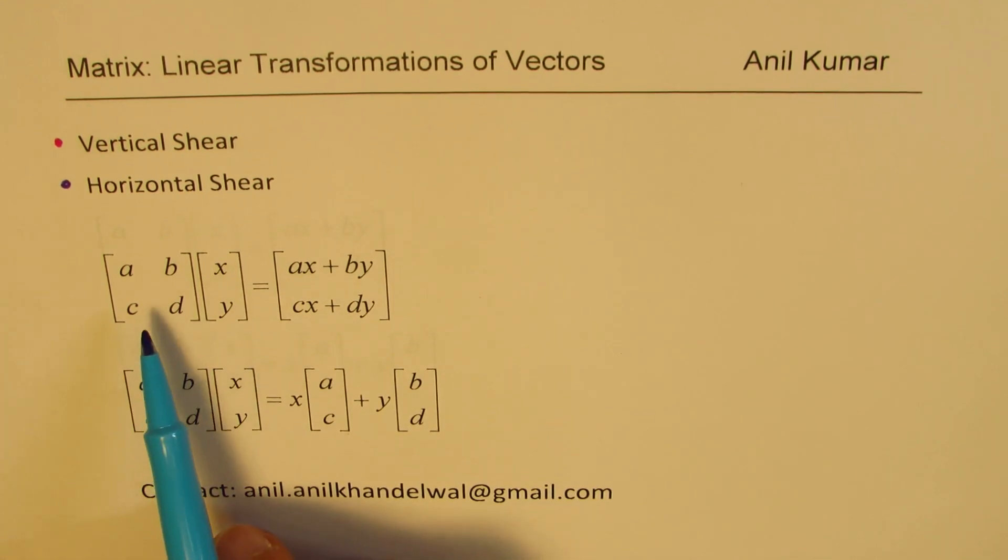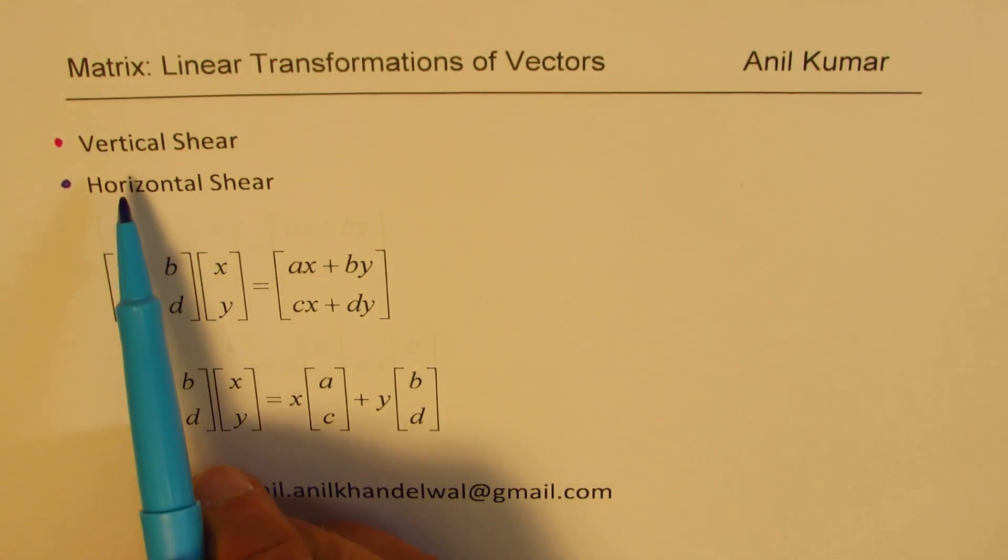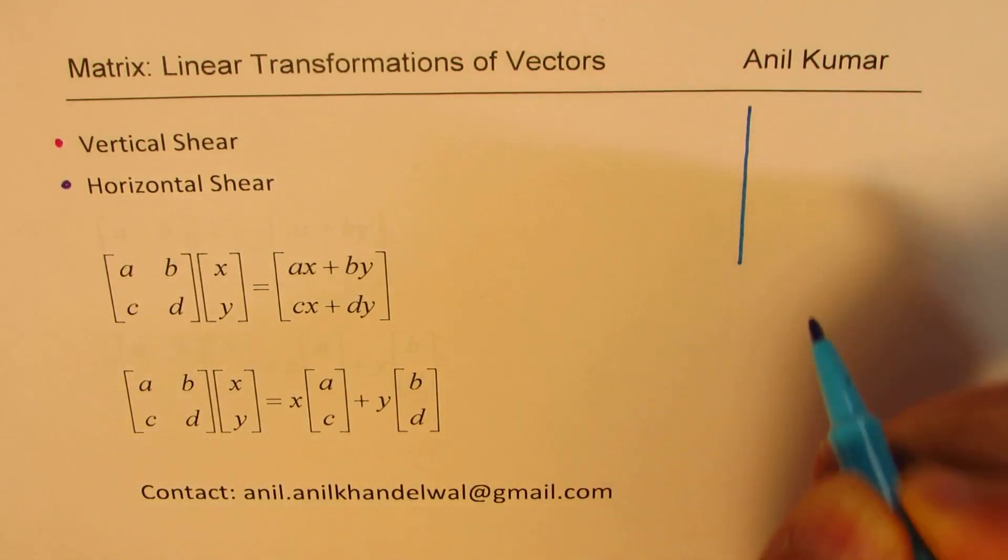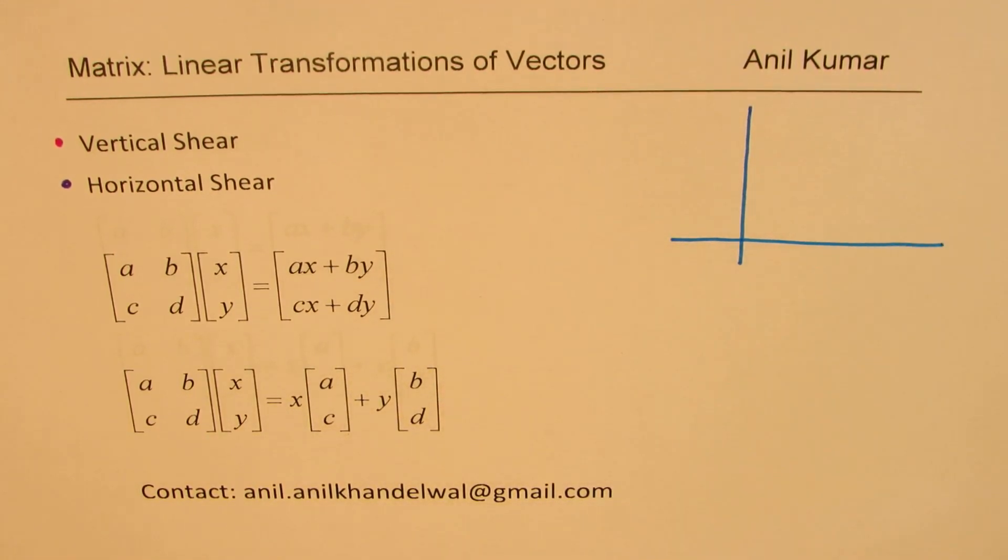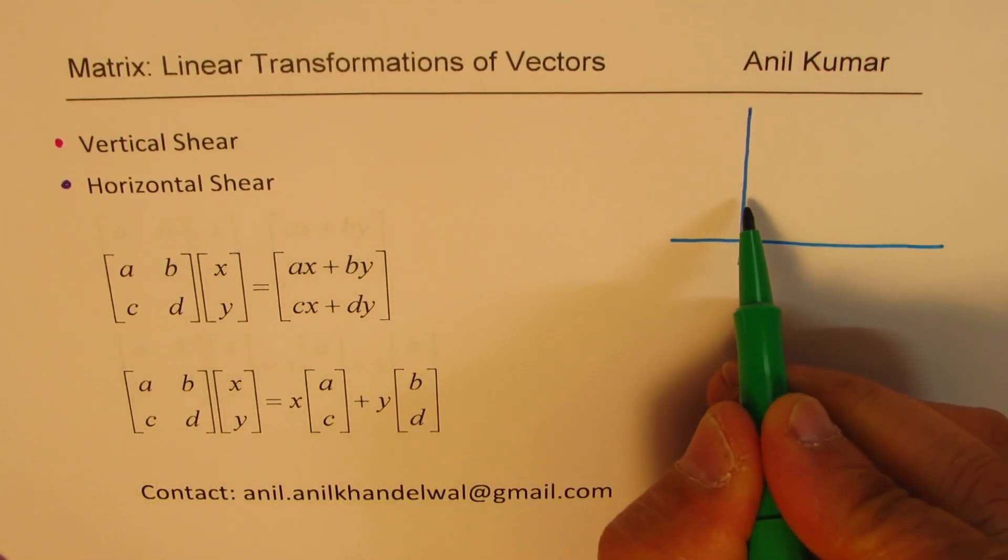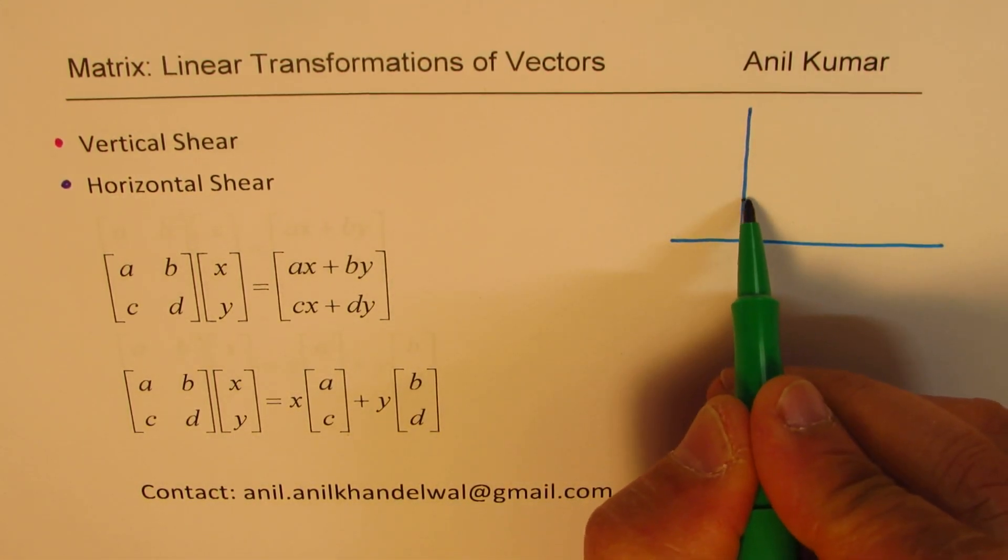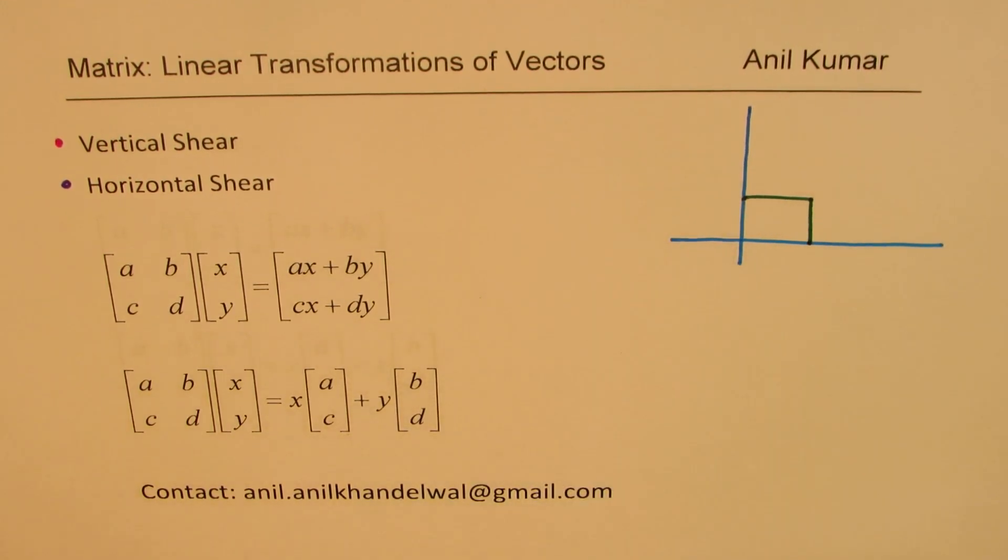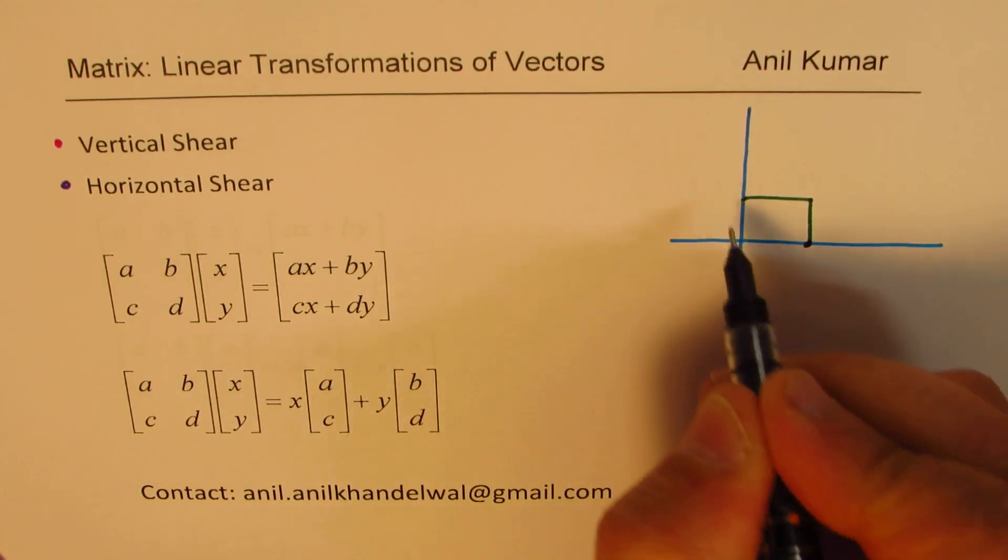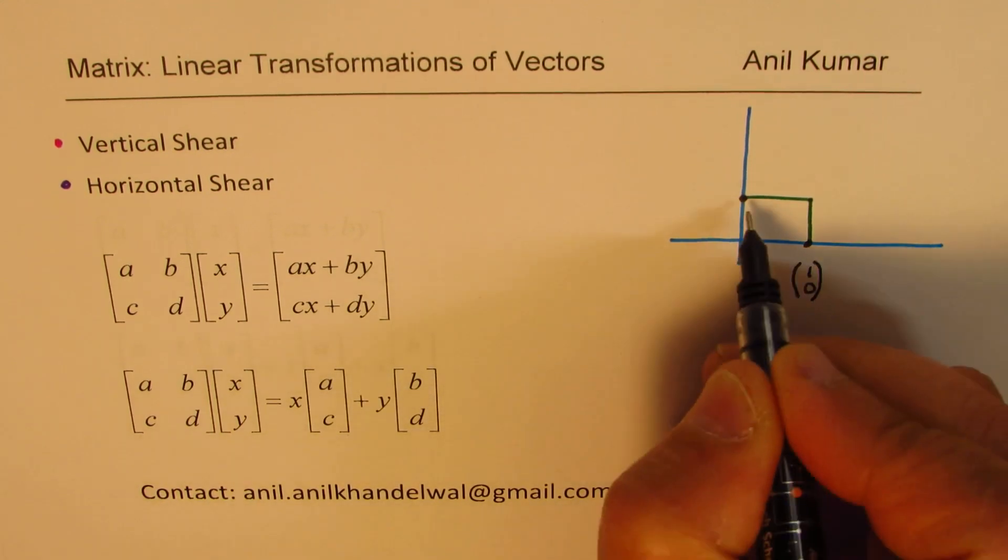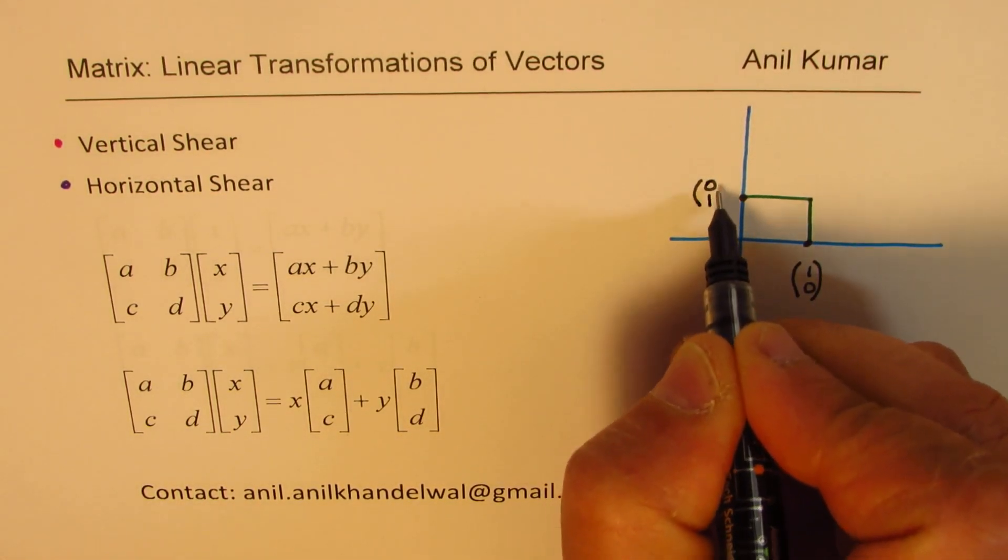We'll now see how to create a transformation matrix which can perform vertical shear or horizontal shear. So let me first explain these two terms. What do they mean? Let us take a unit square. Let's take a square. So let's take a unit square. In this case, the points could be written as these two points. We could write this value as 1,0 and here we could write this as 0,1.